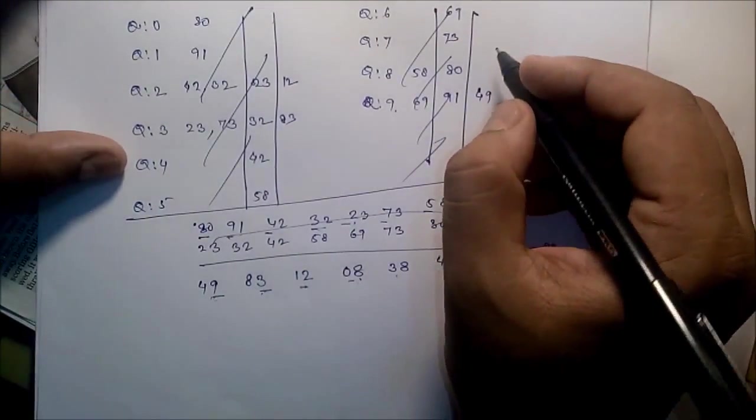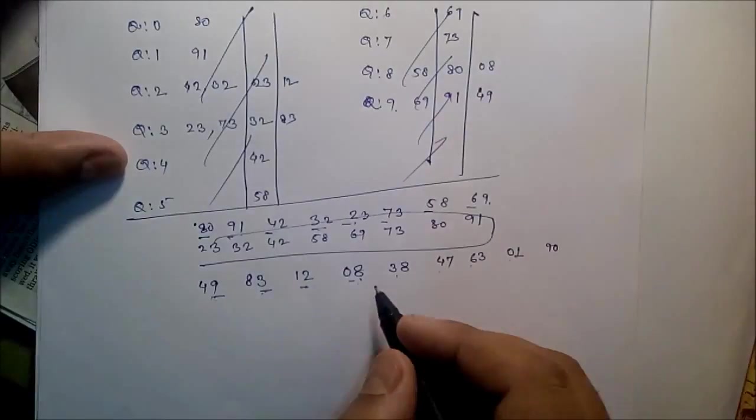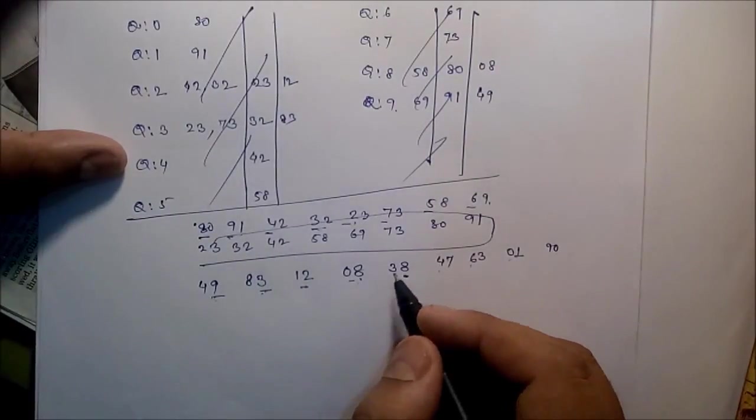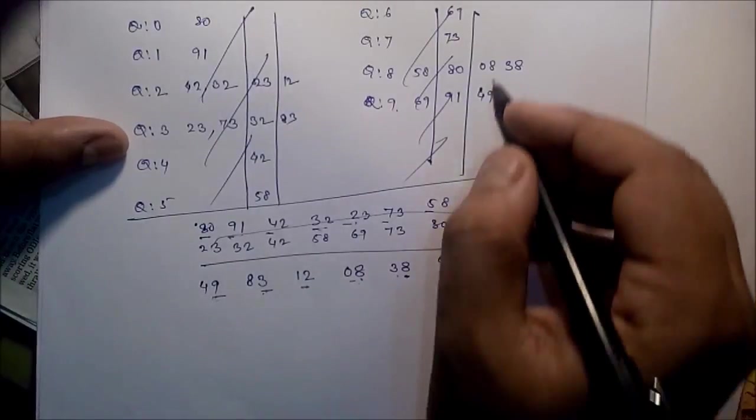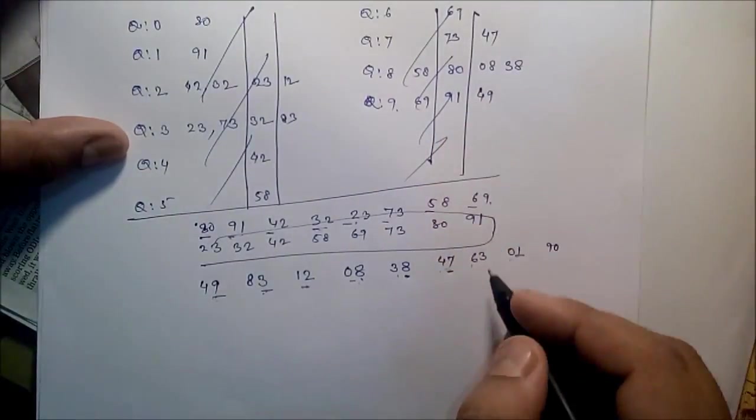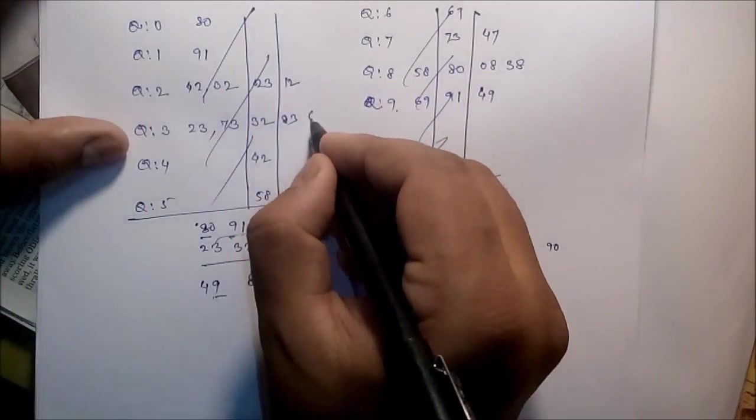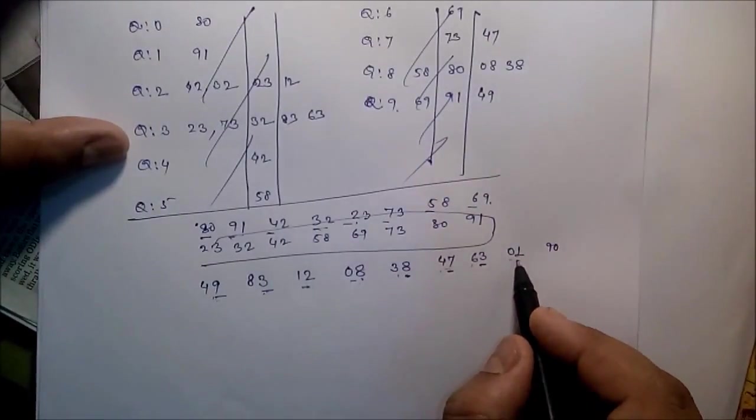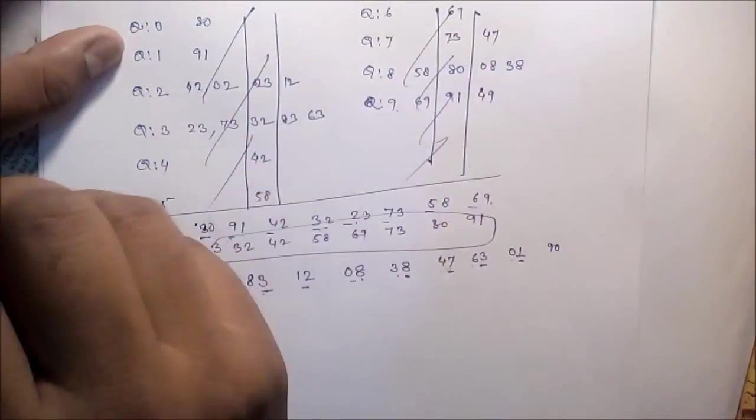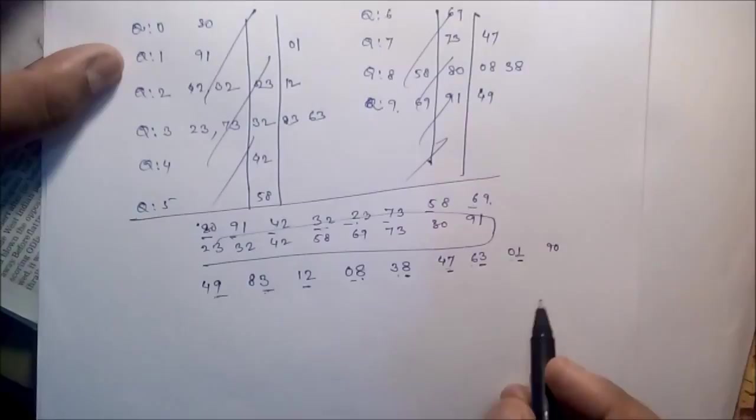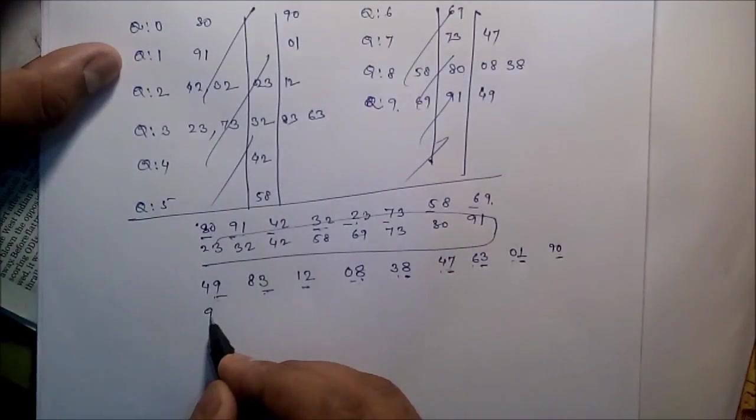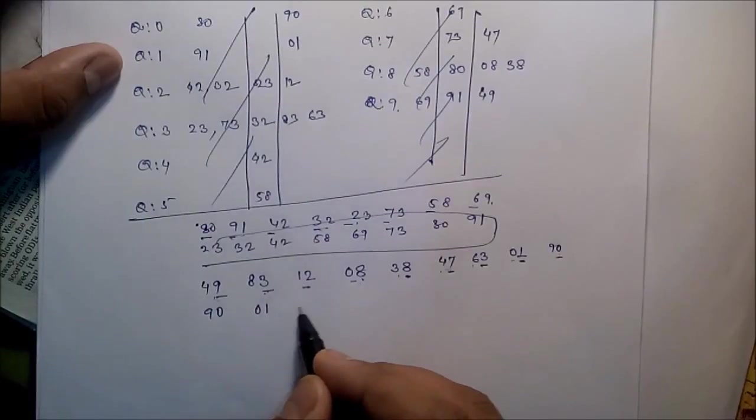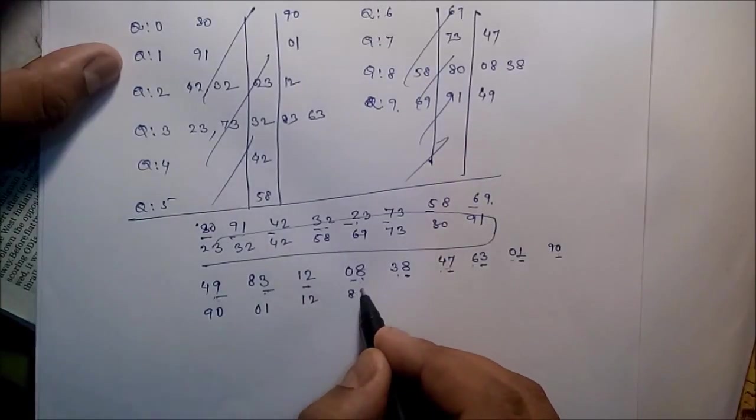So 49, due to this 9 it should be here. Then 83 should be here. Then 12, 90, 01, 12, 08 due to this 8, 38, 47 due to the 7, 63, 01 due to this 1, and 90.